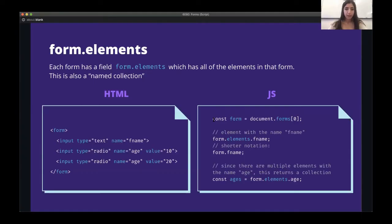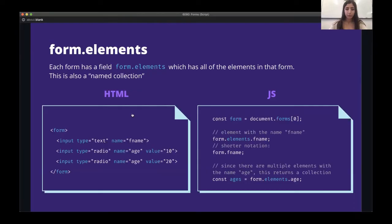For something like a radio button, since we have two radio buttons with the same name, doing form.elements.age is going to return a collection for us. That's how you can read values from a form.